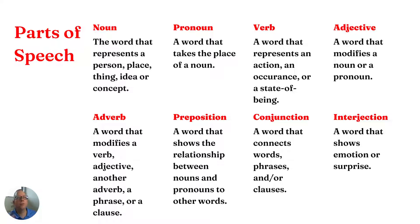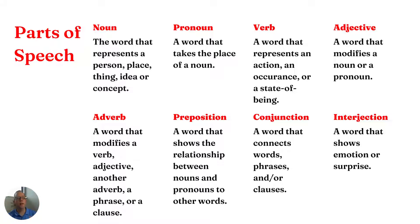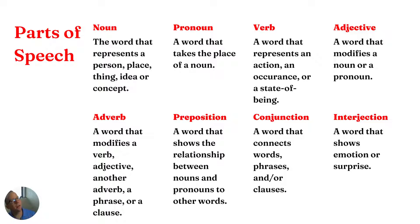Adjectives are the words that modify or describe nouns or pronouns. So if you want to say something about a person, place, thing, idea, or concept — you want to describe it — you're probably using an adjective. Adverbs are the words that modify basically any other part of the sentence. That could be a verb, an adjective, another adverb, or groups of words like a phrase or a clause. Oftentimes they stand out because they might have an -ly at the end, but not always.